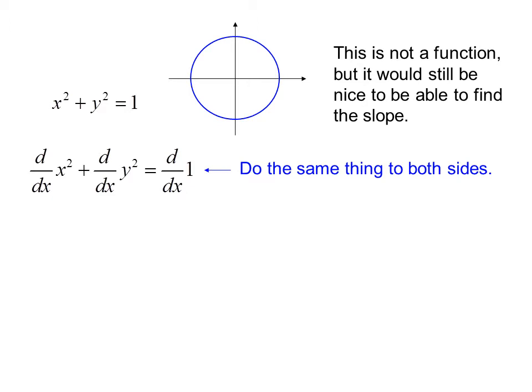We take the derivative with respect to x, and we get 2x plus 2y dy/dx equals 0. Notice that when we took the derivative with respect to x of y squared, because it was the derivative with respect to x, not y, we needed to use the chain rule.